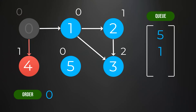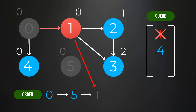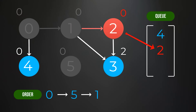Another node dependent on node 0 is node 4, so we decrease its indegree count to 0 and add it to the queue. Next, node 5 is removed from the queue and added to the topological ordering — no nodes depend on node 5, so we move on. Node 1 is removed and added to the ordering. Node 2 depends on node 1, so we decrease its indegree count to 0 and add it to the queue. Node 3 also depends on node 1, so we decrease its indegree count to 1 — since it's not 0 yet, we can't add it to the queue.